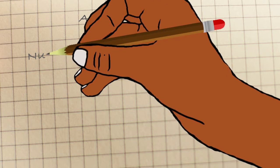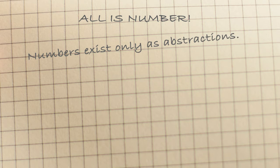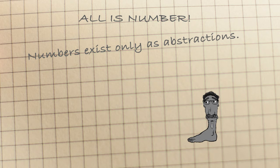Numbers exist only as abstractions. Thales, for example, took some material stuff, water, and made it into an abstraction. So we could say the Pythagoreans made a step forward. They don't begin with concrete things at all.